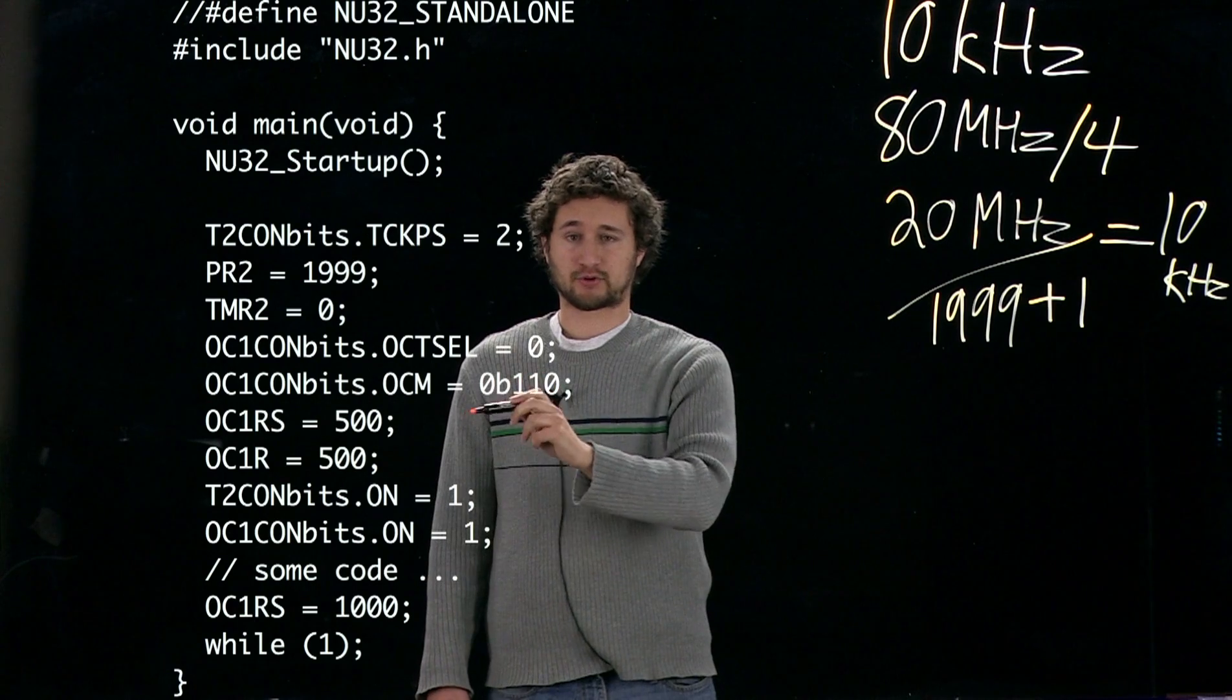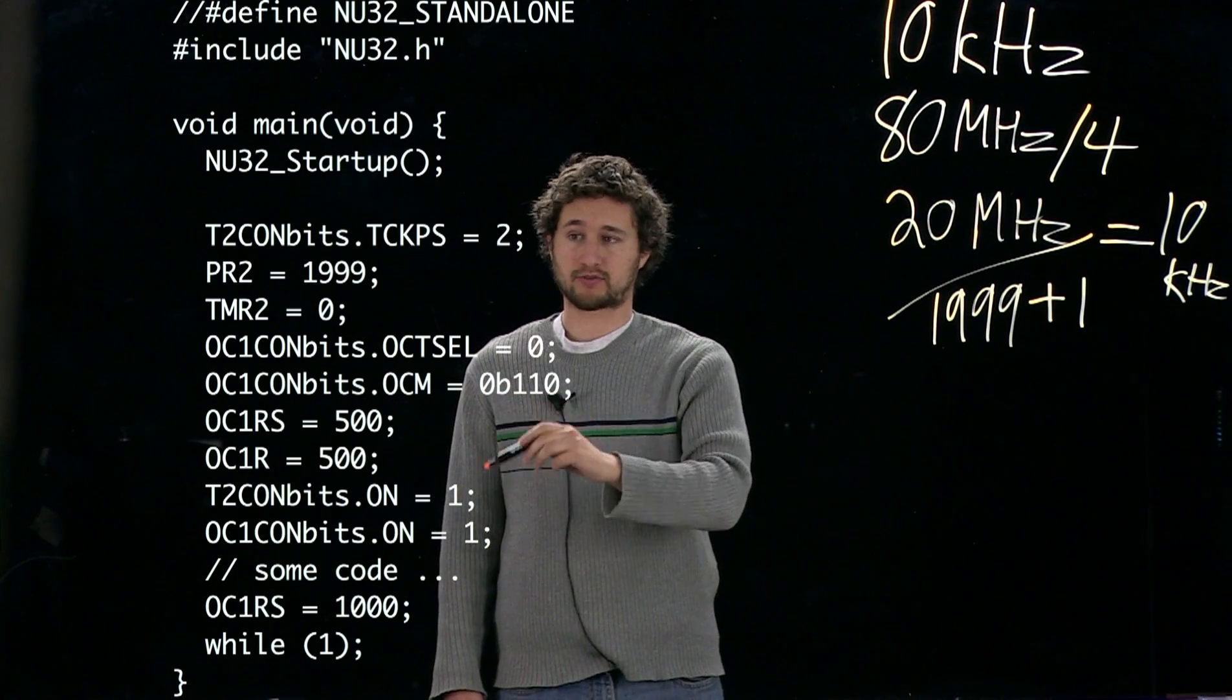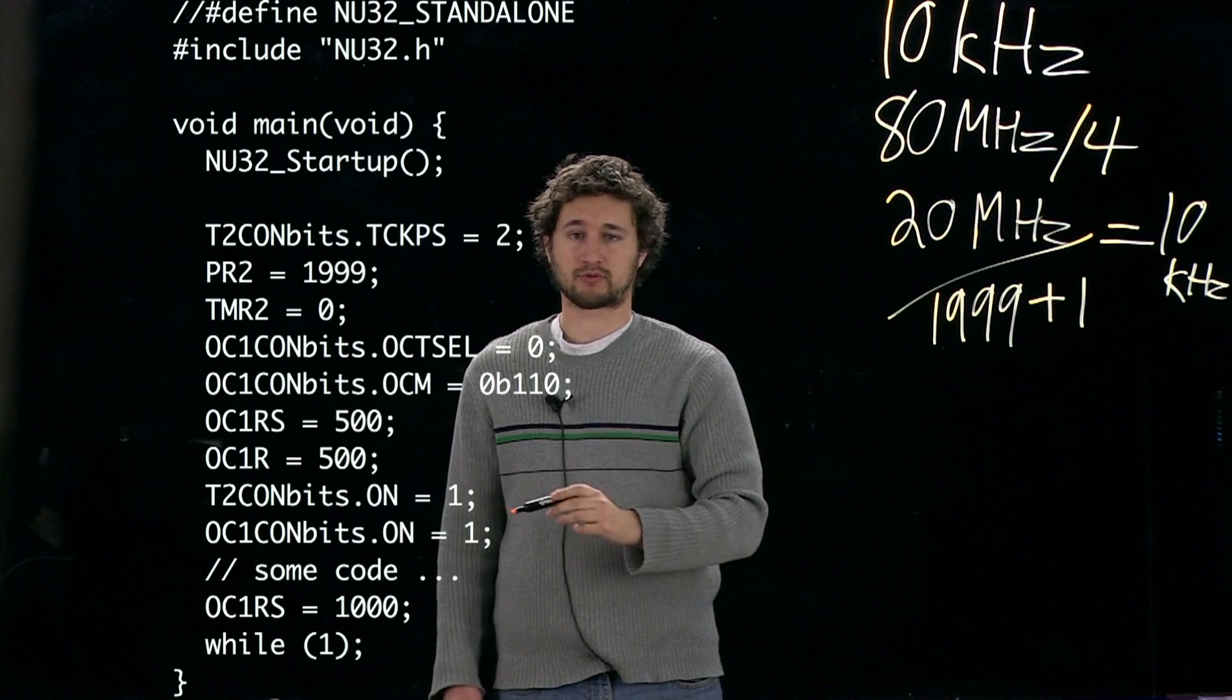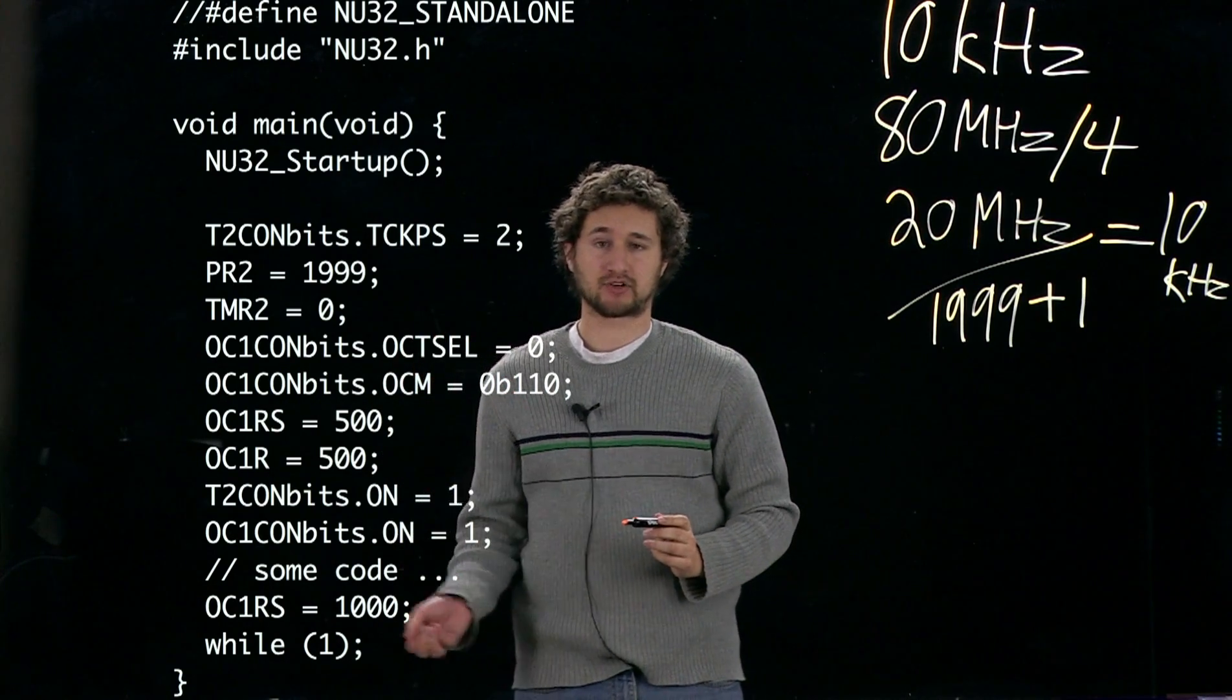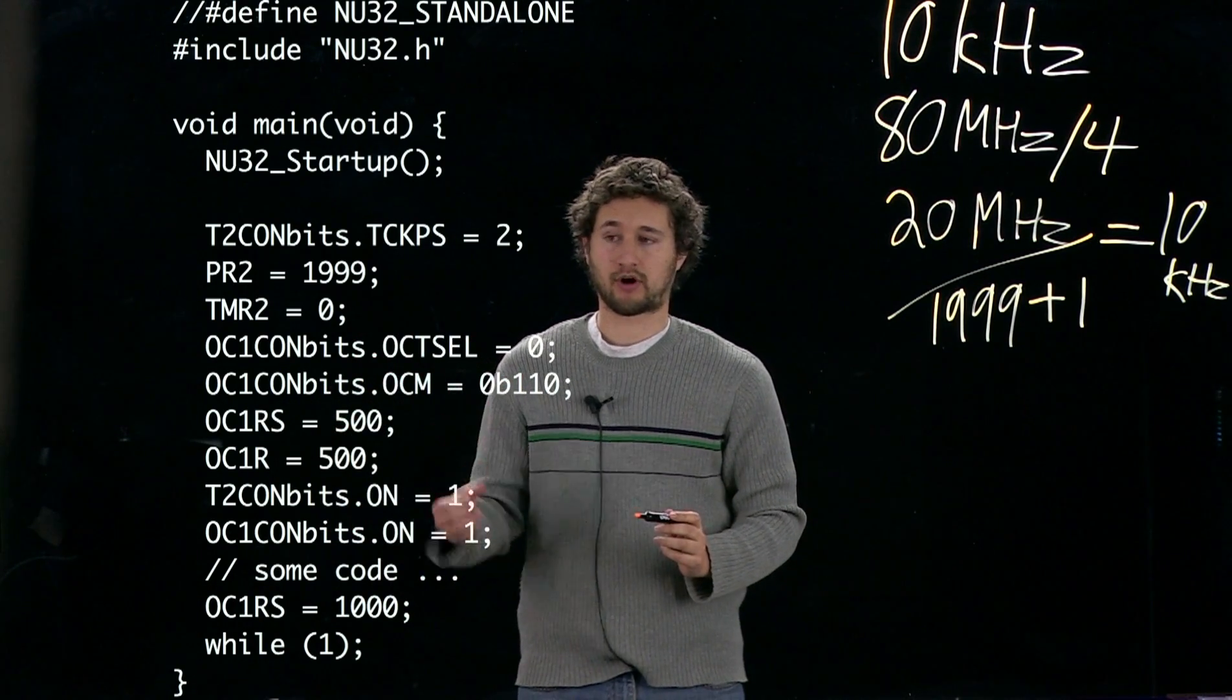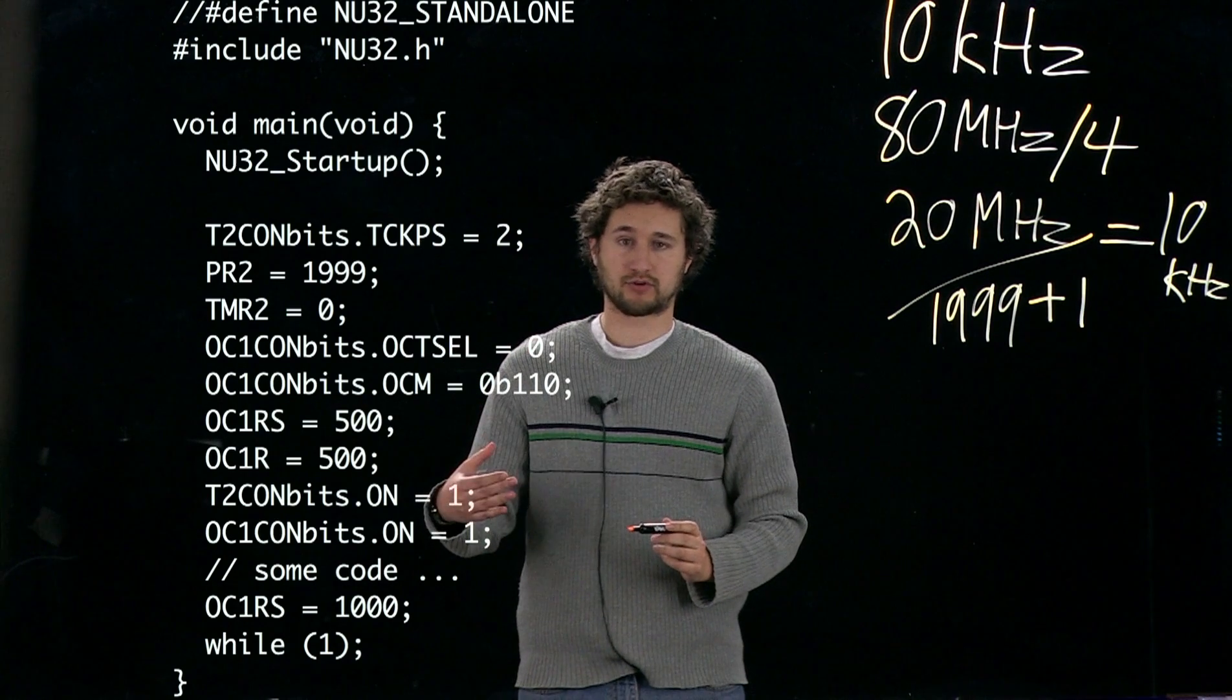Remember that after we turn on the timer, we can't write to OC1R. That's why there's these two registers here. OC1RS automatically gets loaded into OC1R every time timer 2 rolls over.